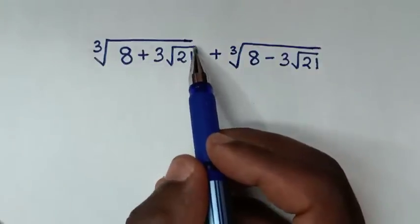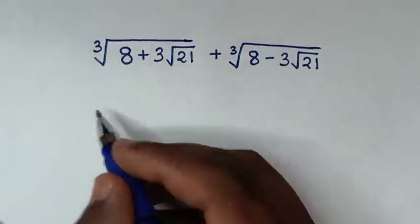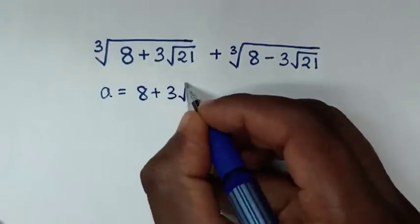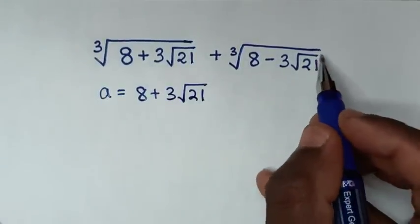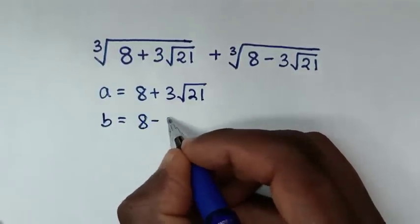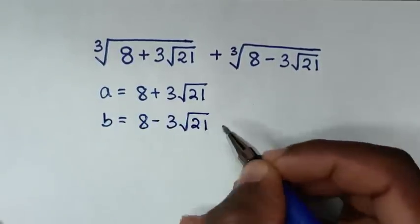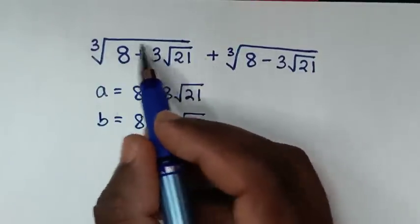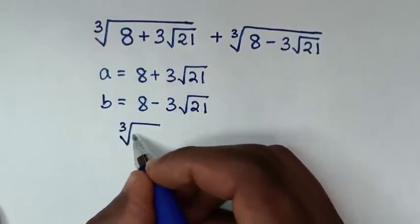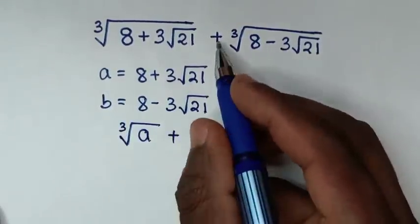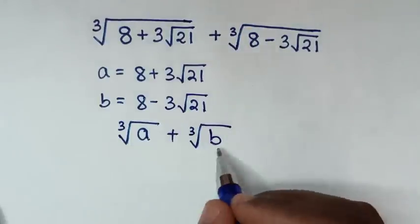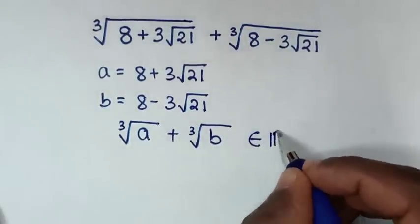In the first step, we'll let the expression under the first cube root be a. So a is equal to 8 plus 3 square root of 21. And the expression under the second cube root we'll let be b. So b is equal to 8 minus 3 square root of 21. Now, because we have cube root of a plus cube root of b, and this sum is an element of the real numbers.